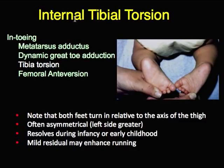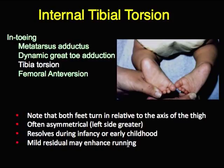The most common thing is internal tibial torsion. In affected infants, both feet turn in relative to the thigh, and it's often asymmetrical with the left side being worse. It resolves during infancy and early childhood, and even if it doesn't completely resolve, a little residual may actually enhance the running ability of children, as shown in a previous study.